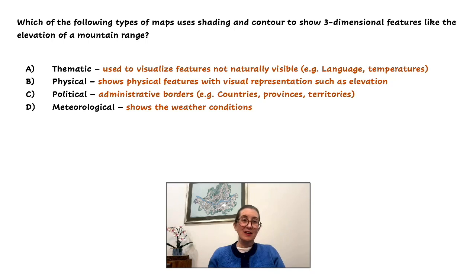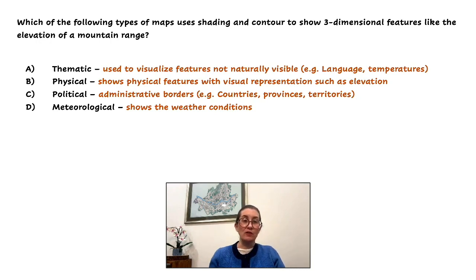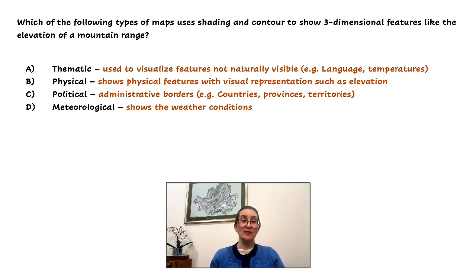Let's look at each. A thematic map is used to visualize features that are not naturally visible, such as language or temperatures. A physical map shows physical features with visual representation, such as elevation. A political map shows the administrative borders, such as countries, provinces, and territories. And meteorological shows weather conditions. So the type we're looking for shows features such as elevation, and that is exactly what a physical map does. So our answer is B.